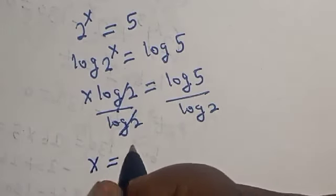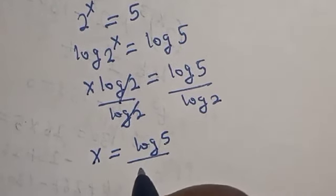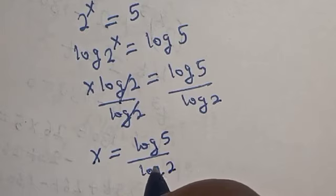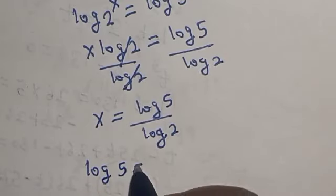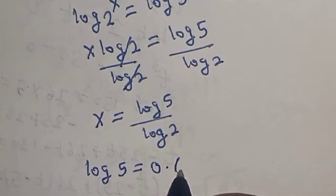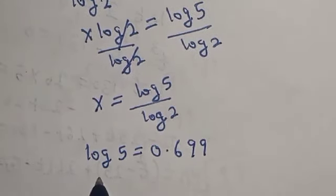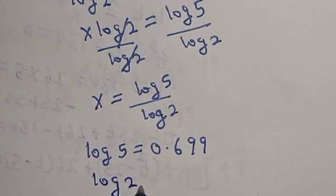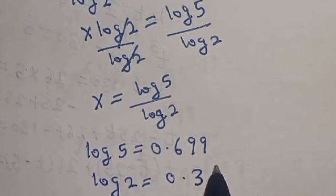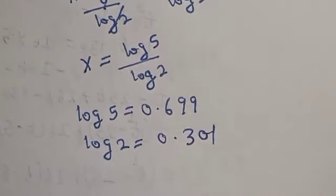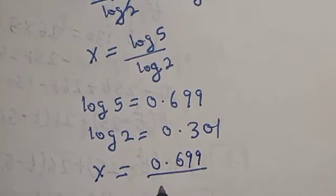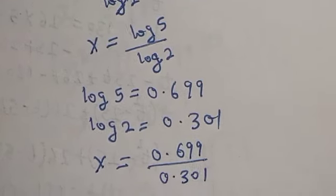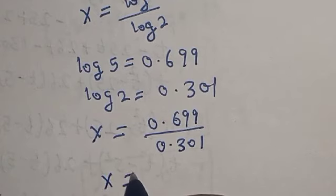So s equals log 5 over log 2. Log 5 equals 0.699 and log 2 equals 0.301. Therefore s equals 0.699 over 0.301, which gives s equals 2.32. That is our final answer.